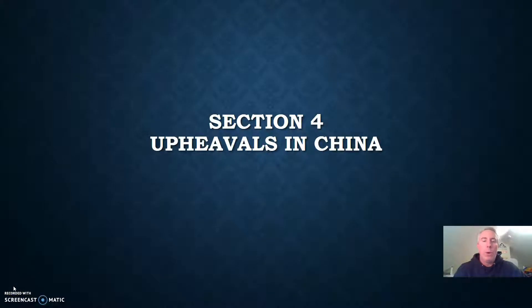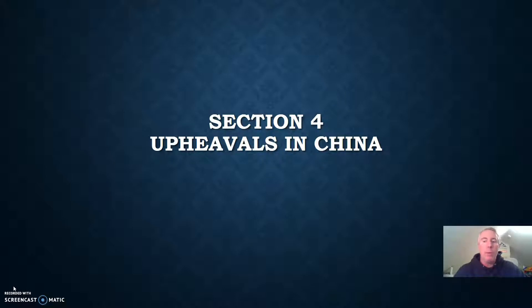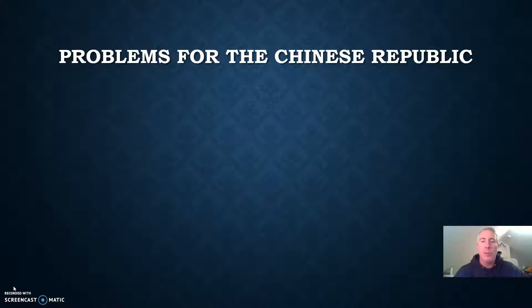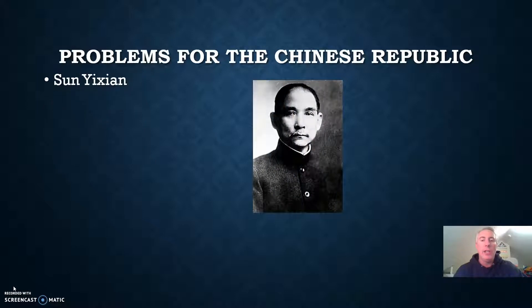In this section 4, we're going to be talking about upheavals in China. We learned back in chapter 24 that the last ruling dynasty of China, the Qing Dynasty, collapsed in 1911, and a Chinese Republic was formed right after that. Let's talk about the father of the Chinese Republic, a very important figure in 20th century Chinese history, and that's Sun Yixian.